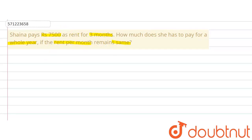So for 3 months, Shaina is paying Rs. 7,500. Now if I want to find out how much she is paying for 1 month, then that will be equal to 1 divided by 3 of what she is paying for 3 months, that is 7,500.